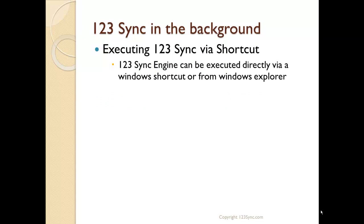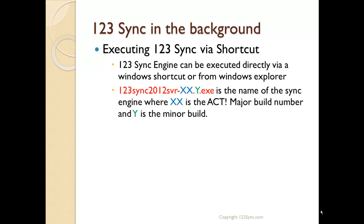The 123Sync engine, which is what we call the piece that does all the synchronization, can be executed directly by a Windows shortcut or from Windows Explorer by simply double clicking. The name of it is 123Sync 2012 Server, followed by the ACT build number, so that you can identify on the installation folder which sync engine you should be using for your particular version of ACT.